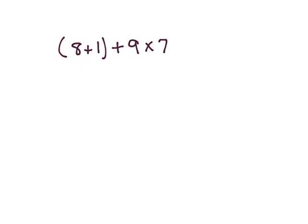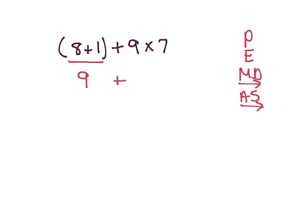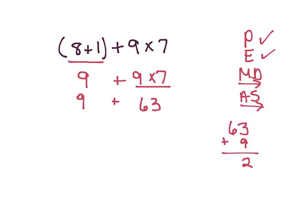The next one says (8 plus 1) plus 9 times 7. First thing I write is my PEMDAS. First is parentheses — are there any? Yes, 8 plus 1. So 8 plus 1 is 9, plus 9 times 7. Are there any parentheses left? No. Any exponents? No. Multiplication or division? Yes — 9 times 7. What is 9 times 7? 63. So now I have 9 plus 63. 63 plus 9 is 72. So that is 72.